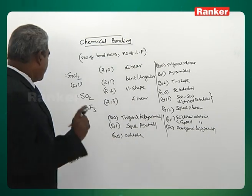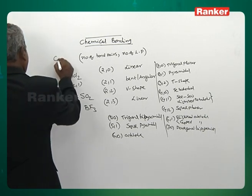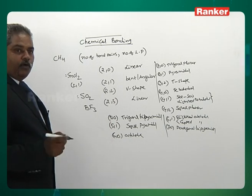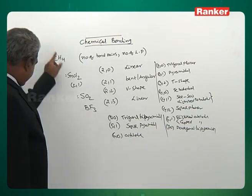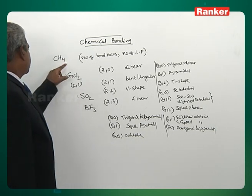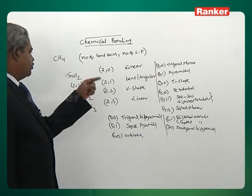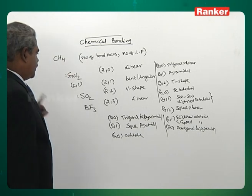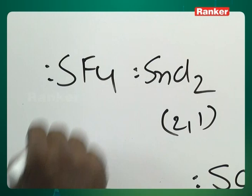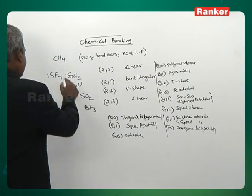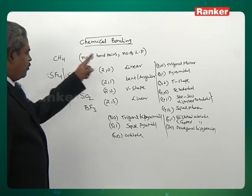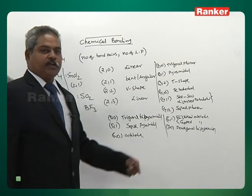SF4 (marked with one lone pair): four bond pairs, one lone pair — four, one (seesaw/distorted tetrahedral). XeF2: xenon has 8 valence electrons, two fluorines use two electrons. Lone pairs = (8 − 2) / 2 = 3. Two bond pairs, three lone pairs — shape is linear, because the three lone pairs occupy equatorial positions while the two bond pairs are axial.